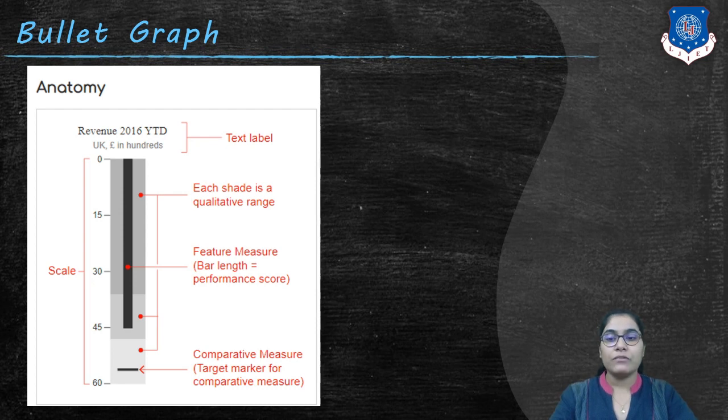Next is our feature measure. The central line that is black in color is our feature measure or we can say bar length which is our performance code. It depicts the actual data. This feature measure represents the revenue of the year 2016 which is actually achieved.